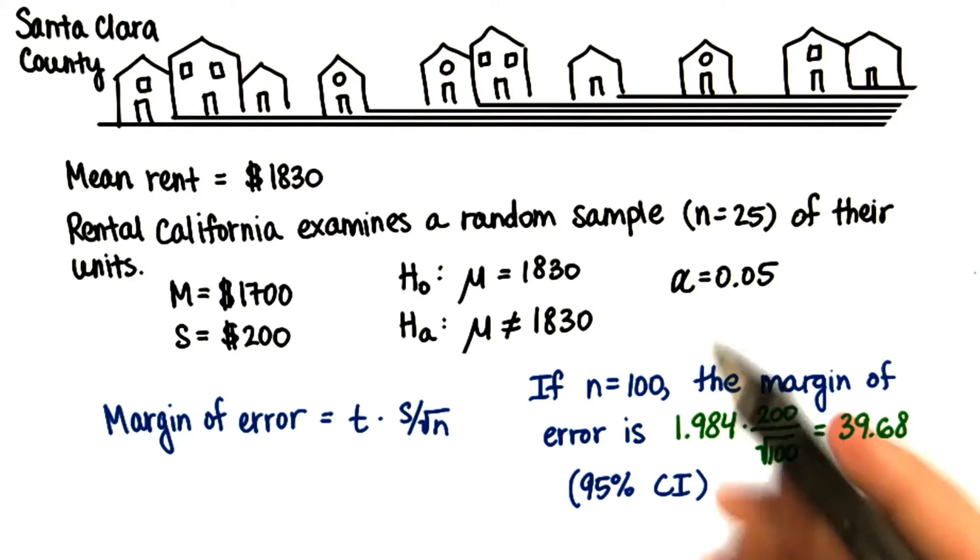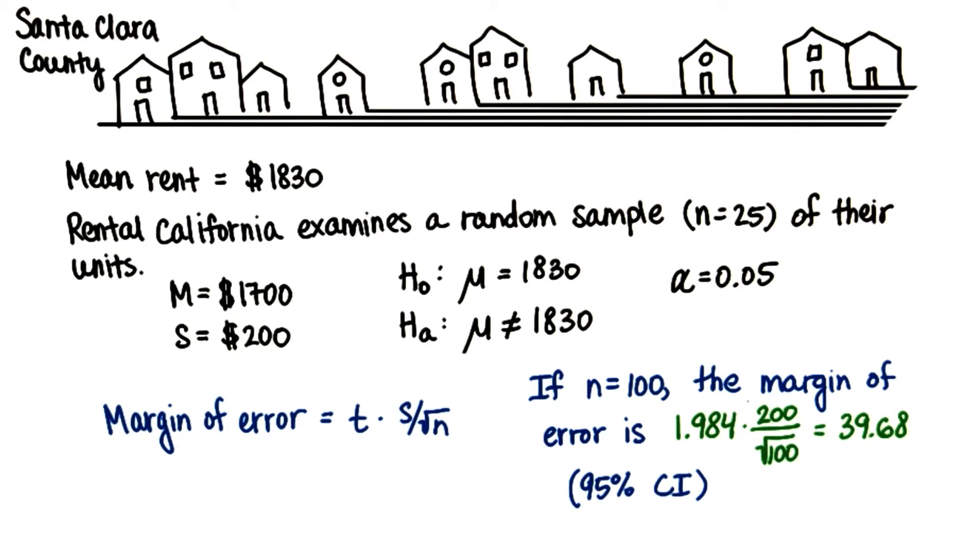So when we increase the sample size, we decrease our margin of error and we're more precise. And remember, when we increase the sample size, we also have more degrees of freedom, and therefore our t-distribution goes from wider to skinnier as it approaches normality.